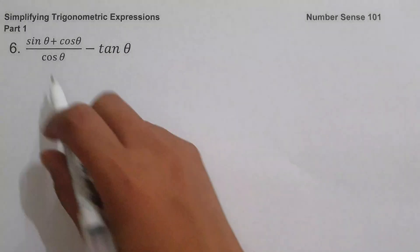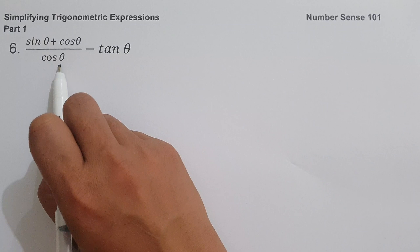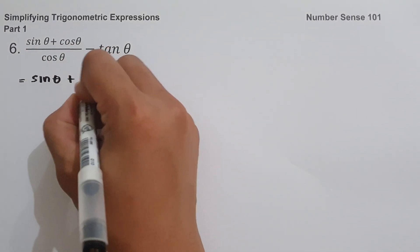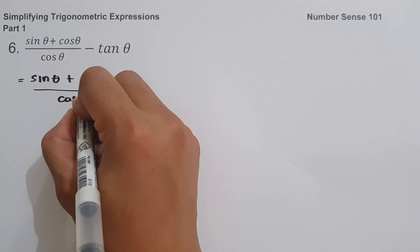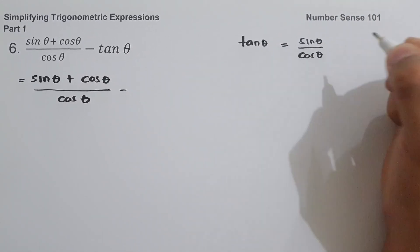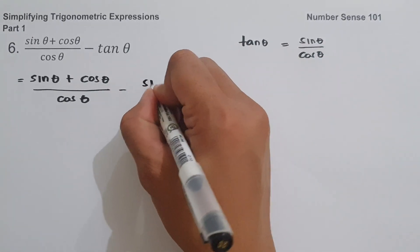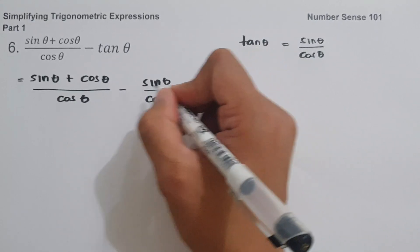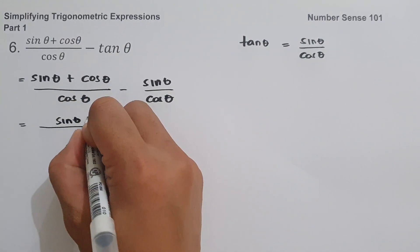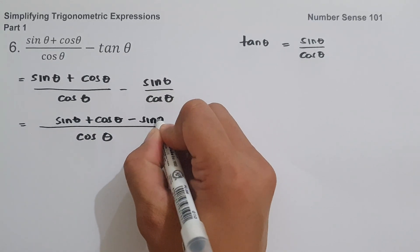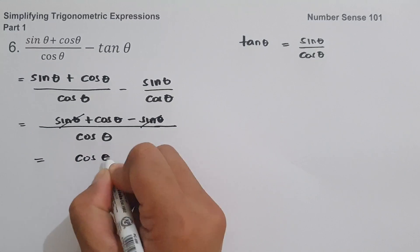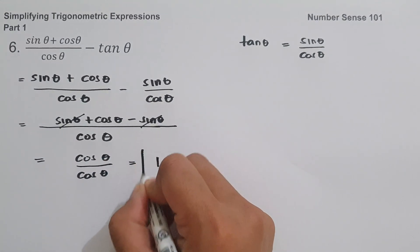On example number six, we have (sin θ + cos θ)/cos θ − tan θ. We write (sin θ + cos θ)/cos θ and replace tan θ with sin θ/cos θ. Since the denominator is the same, the numerator becomes sin θ + cos θ − sin θ. Sine θ minus sine θ is 0, leaving cos θ/cos θ, which equals 1. That is our answer.